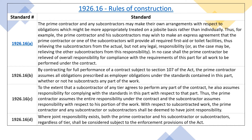1926.16b: By contracting for full performance of a contract subject to Section 107 of the act, the prime contractor assumes all obligations prescribed as employer obligations under the standards contained in this part, whether or not he subcontracts any part of the work. 1926.16c: To the extent that a subcontractor of any tier agrees to perform any part of the contract, he also assumes responsibility for complying with the standards in this part with respect to that portion. Thus, the prime contractor assumes the entire responsibility under the contract and the subcontractor assumes responsibility with respect to his portion of the work. With respect to subcontracted work, the prime contractor and any subcontractor or subcontractors shall be deemed to have joint responsibility. 1926.16d: Where joint responsibility exists, both the prime contractor and his subcontractor or subcontractors, regardless of tier, shall be considered subject to the enforcement provisions of the act.